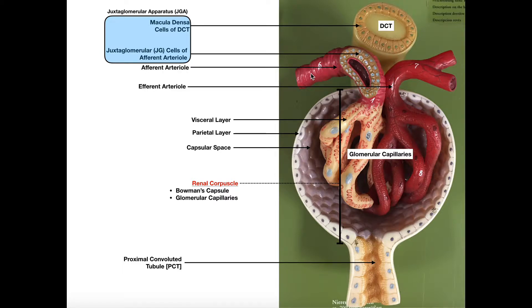This is our afferent arteriole — the arteriole that feeds the glomerular capillaries. As blood moves through the capillaries, eventually it will leave the renal corpuscle, and it does so through the efferent arteriole, which drains the corpuscle, or drains the glomerulus.